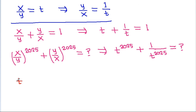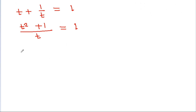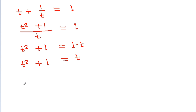We have t minus 1 by t is equal to 1, and it is t squared minus 1 by t is equal to 1. And t squared minus 1 will be equal to 1 times t, so t squared minus 1 is equal to t. And it is t squared minus t minus 1 is equal to 0.